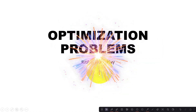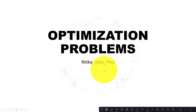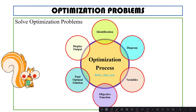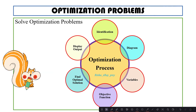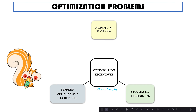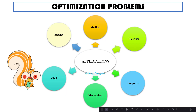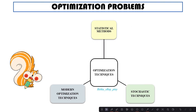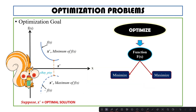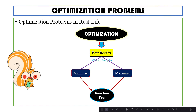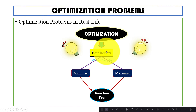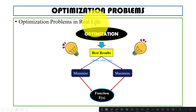This video is based on optimization and optimization problems. We will try to understand what is optimization, the optimization process, different techniques that we can use for optimization, and different areas where we can use optimization to solve different problems. Optimization is an act of obtaining the best result under given circumstances for real-life problems.